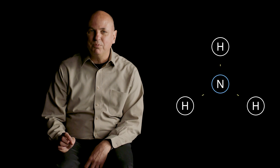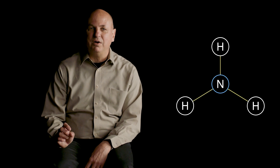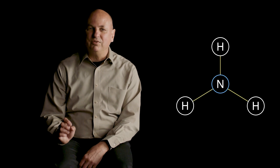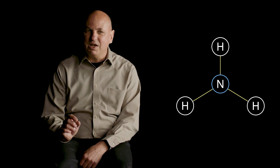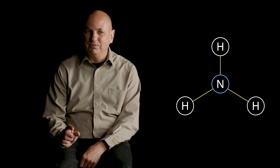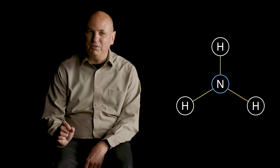It's certainly useful to know that ammonia has one nitrogen and three hydrogen atoms, but we may also want to know how these atoms are connected to one another. This is where structural formulas come in. Here, lines represent chemical bonds, and the drawing shows us that each hydrogen atom is connected to the nitrogen atom through a single bond.